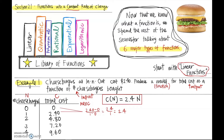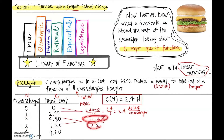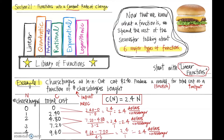The units will be the cost units — dollars — over the n units, which is number of cheeseburgers. So the average rate of change is $2.40 per cheeseburger. Looking at a couple other intervals, the difference of the outputs over the difference of the inputs gives us the exact same thing: $2.40 per cheeseburger again. This is something we're seeing for the first time — wherever we take an average rate of change in this function, we're ending up with the same number.